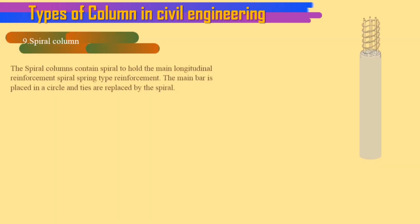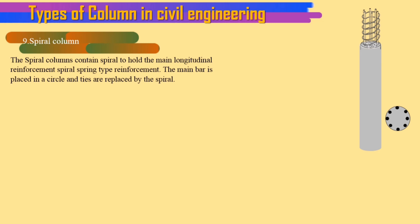9. Spiral column. The spiral columns contain spiral to hold the main longitudinal reinforcement spiral spring type reinforcement. The main bar is placed in a circle and ties are replaced by the spiral.